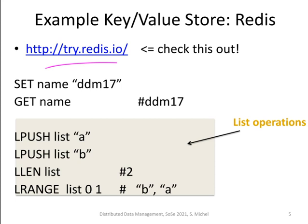An example of a simple system is a so-called key-value store: Redis. You can try it out — it has very simple routines. For instance, the SET command assigns a value to a variable name, so a variable name could be set to 'DDM17', and when you issue GET you retrieve the value. You can also have list operations. These operations should be very fast, since there are no joins involved — it's more like a hash-based mapping of the name to one server, then retrieving the value from that server.